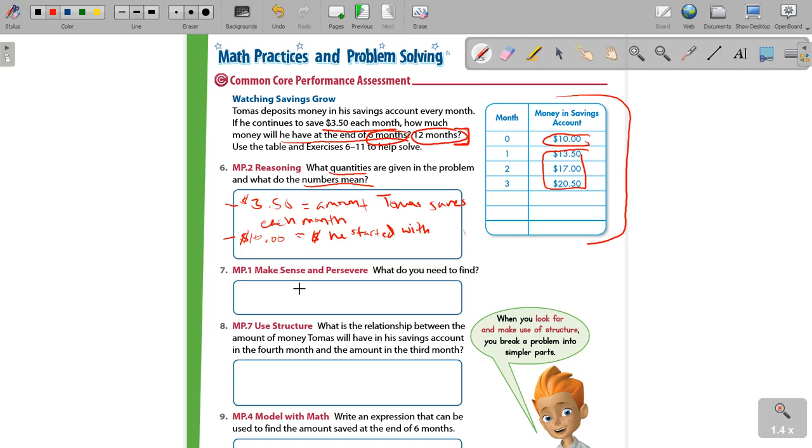So what do you need to find? Well, that's exactly what you need to find. How much Tomas has at the end of six months and at the end of 12 months. That's what they want us to find here. Now, we only have up to three months here. So we need to figure out if he's saving, again, how much is he saving?